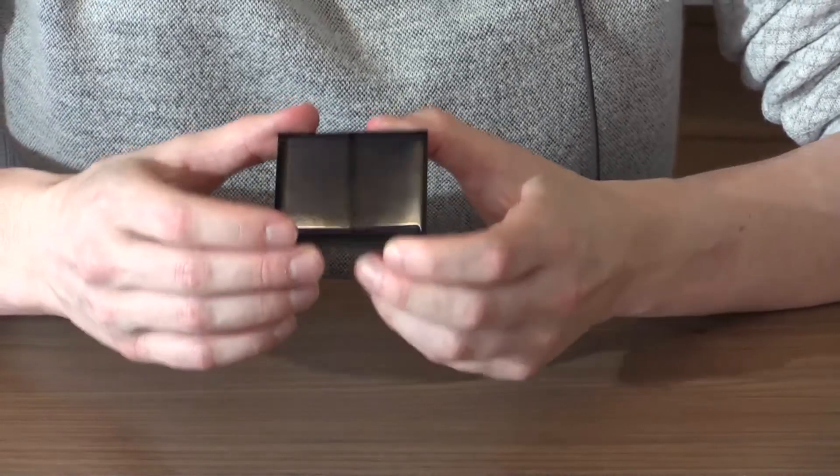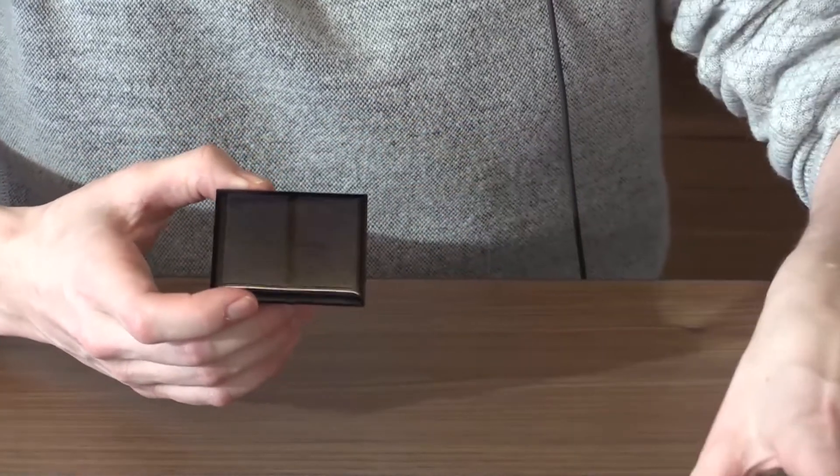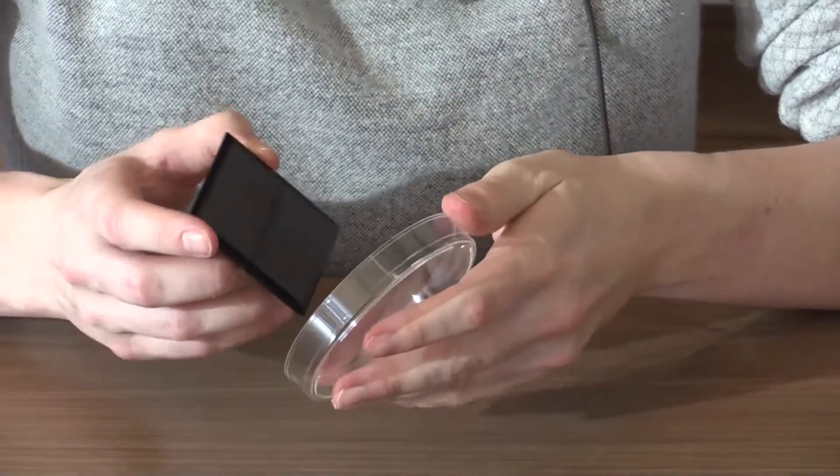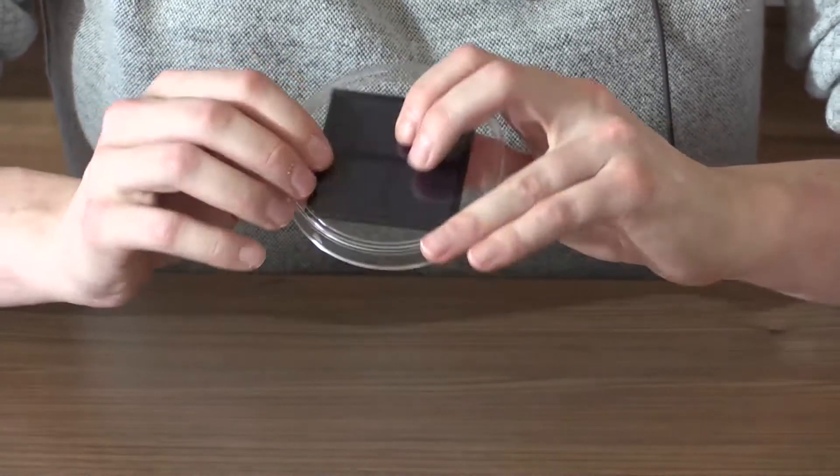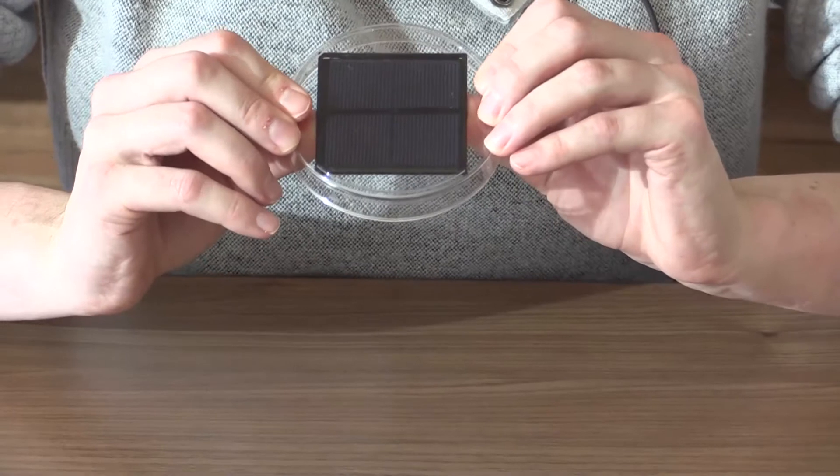Once you have that working, you can go ahead and take the petri dish and you're going to attach your solar panel and spinner to the petri dish.